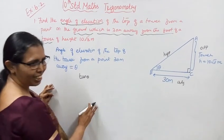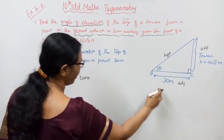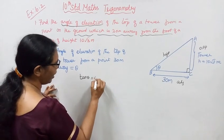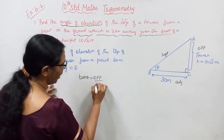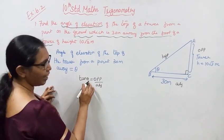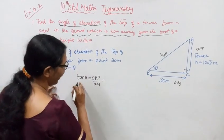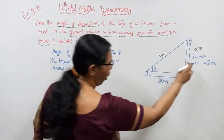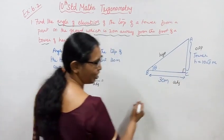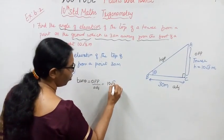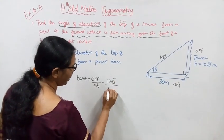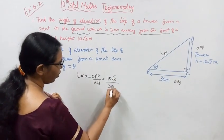Tan theta equals opposite over adjacent. The opposite side is 10 root 3 and the adjacent side is 30. So tan theta equals 10 root 3 over 30.